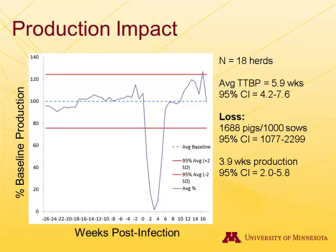We have our upper and lower control limits established by the control data. You can see that the farm data dips down — this is an average of all 18 herds — basically like what you've heard in all the reports with PED, but it's nice to see it actually happening on a graph.